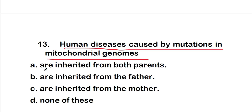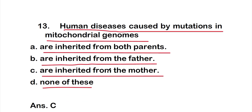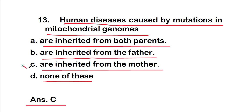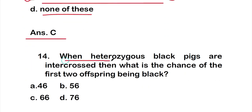Question thirteen: human diseases caused by mutations in mitochondrial genomes — are they inherited from both parents, from the father, or from the mother? The right answer is option C, they are inherited from the mother.